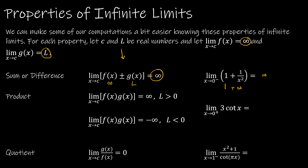For the product property, the result depends on the sign of L. If f of x has a limit of infinity and g of x has a limit L greater than 0, it's basically infinity times a positive value, giving positive infinity. If L is less than 0, then it's infinity times a negative value, resulting in negative infinity. For example, looking at 3 times the cotangent of x: the limit as x approaches 0 from the right of 3 is 3, and the limit of cotangent of x approaching 0 from the right is positive infinity. So it's 3 times infinity, which is still infinity.